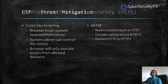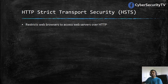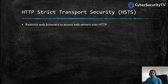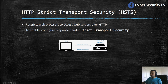Next, let's talk about HSTS — HTTP Strict Transport Security. This restricts the web browser from accessing the web server over HTTP. If your website is available on both HTTP and HTTPS but you have this header configured, it restricts the browser to connect only over HTTPS. As we know, this provides protection against man-in-the-middle attacks. To enable this header, you only need to configure Strict-Transport-Security in the response header.